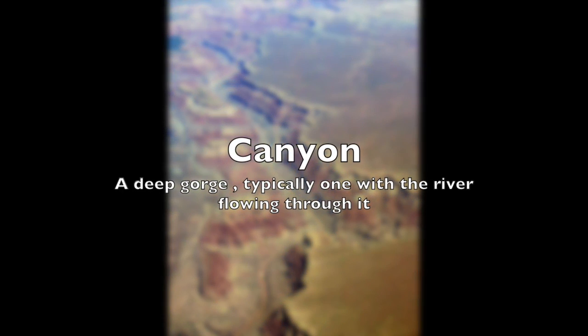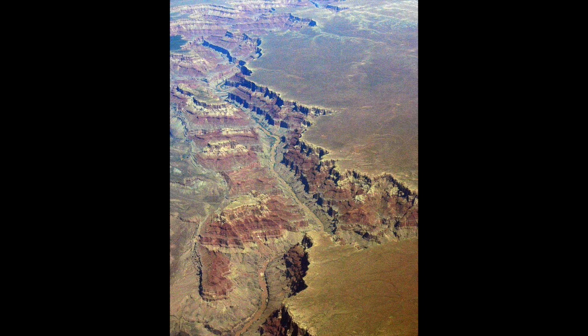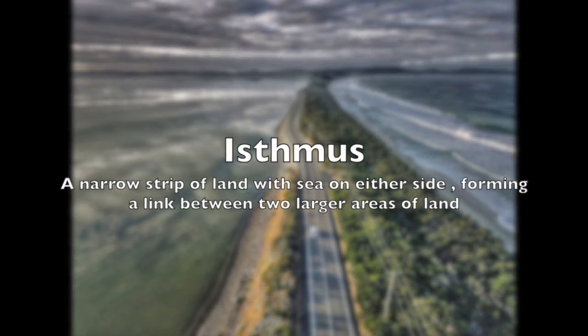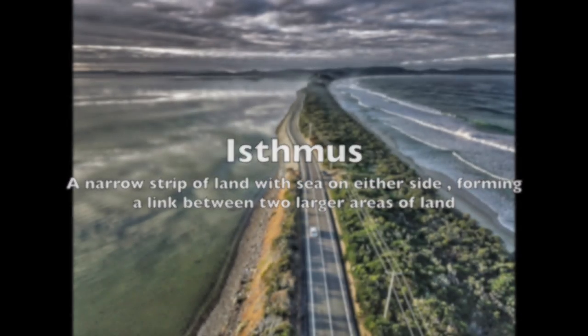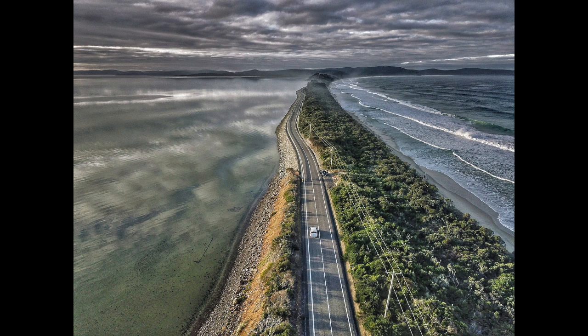Canyon: a deep gorge, typically one with a river flowing through it. Isthmus: a narrow strip of land with sea on either side, forming a link between two larger areas of land.